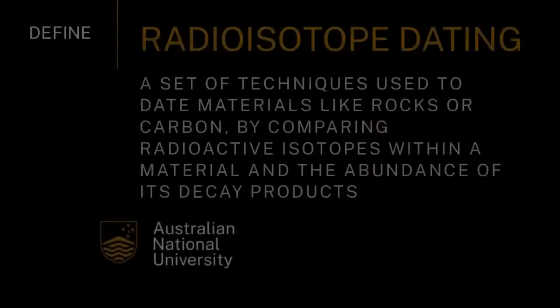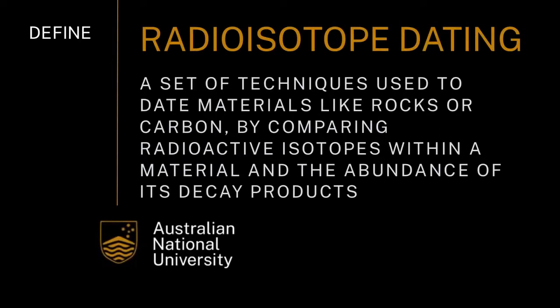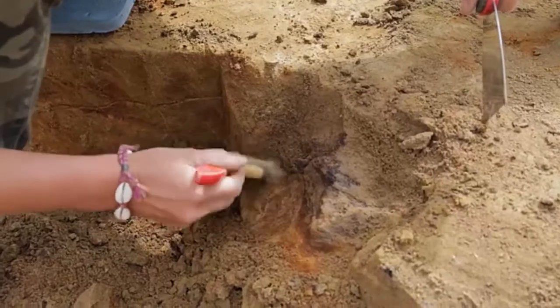Part of the way that we know that they're from the birth of the solar system is by radioisotope dating. And that's what we're going to be looking at today. Radioisotope dating are a set of techniques that can tell us about things from as far back as the beginning of the solar system all the way up to archaeological dig sites today.